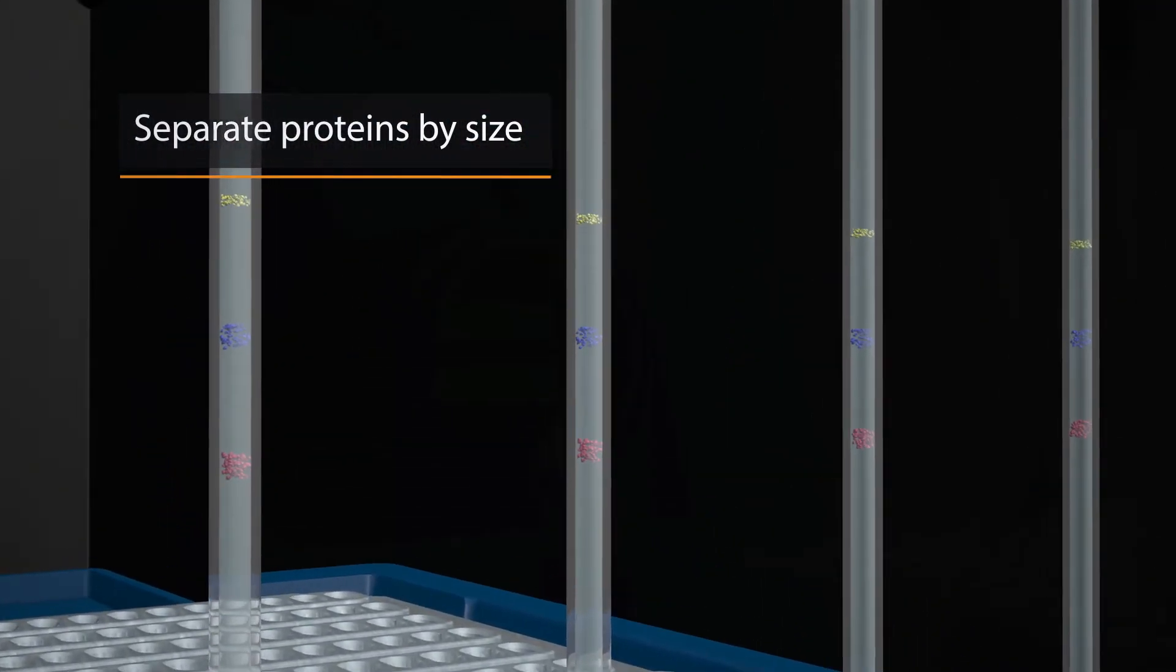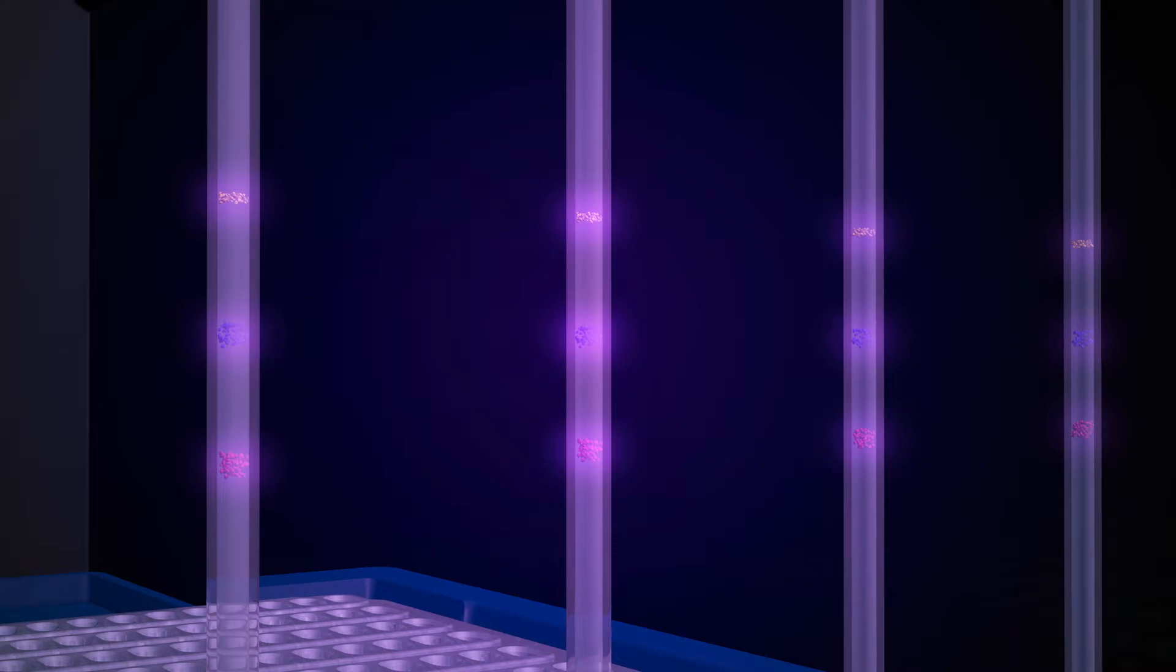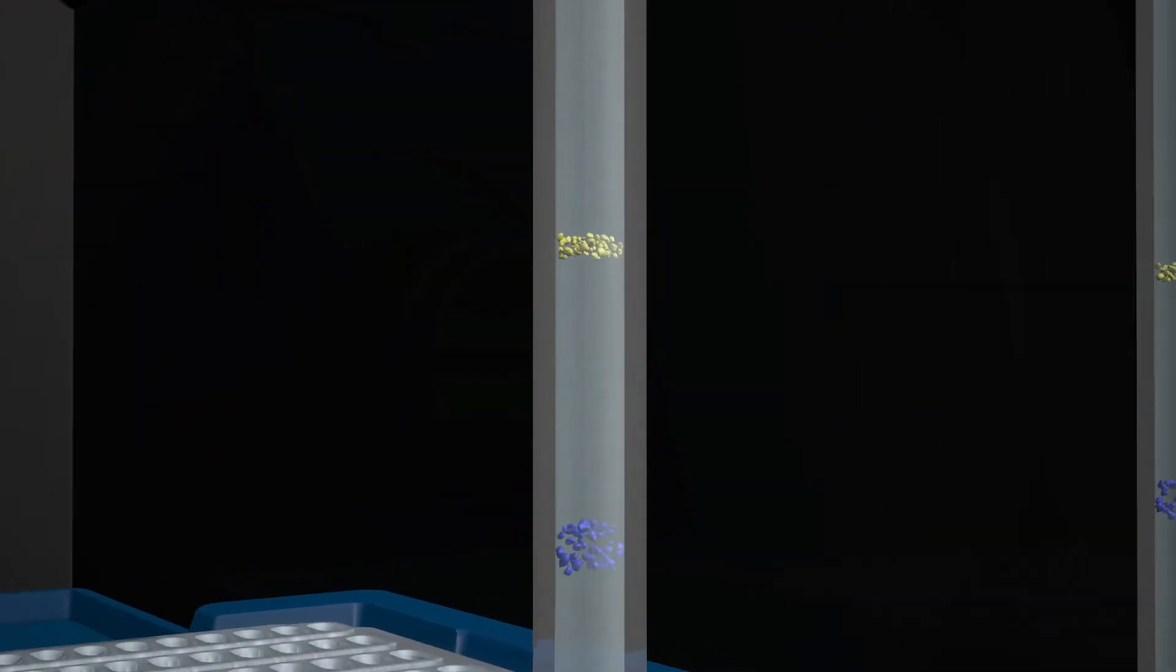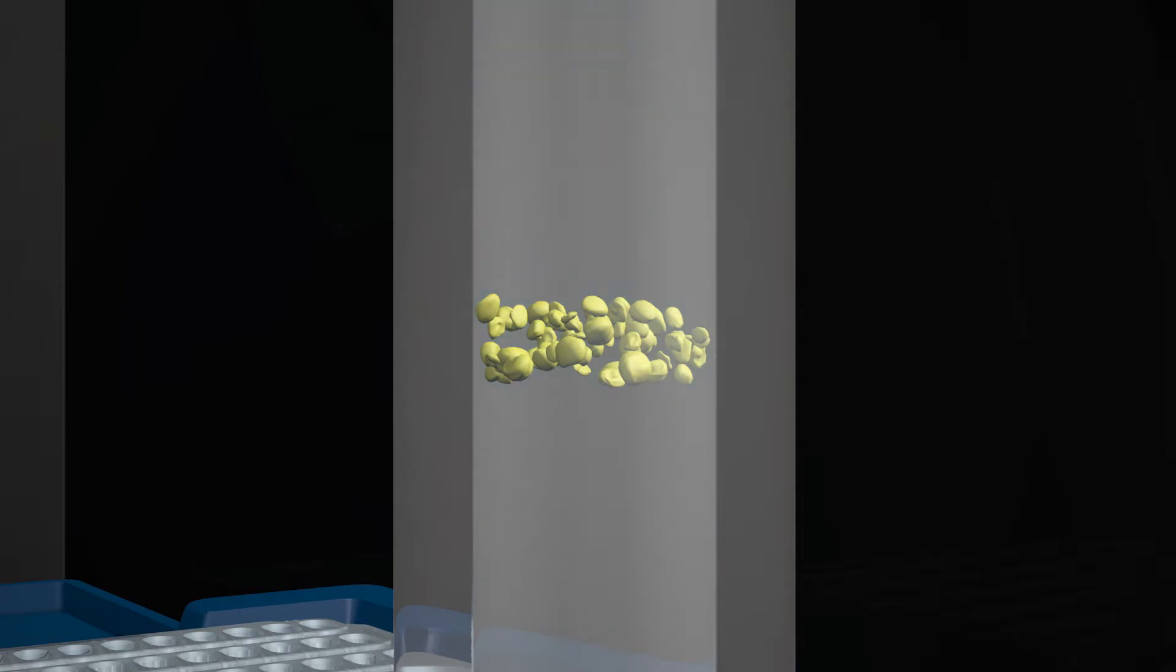Once the separation is complete, UV light immobilizes the proteins to the capillary wall. With proteins now immobilized and the matrices cleared of the capillary, Wes starts the immunoprobing.